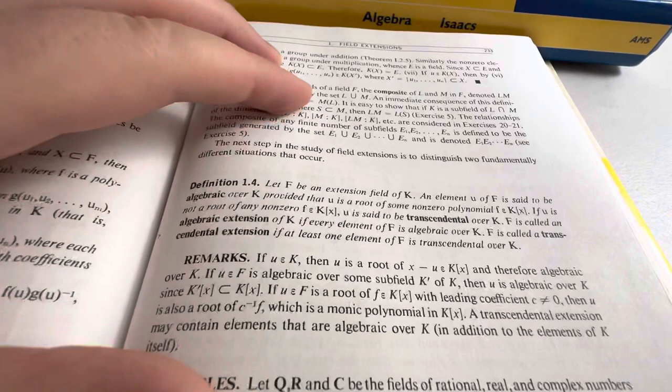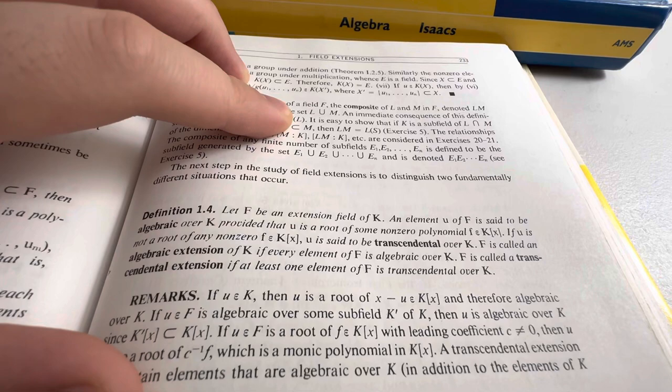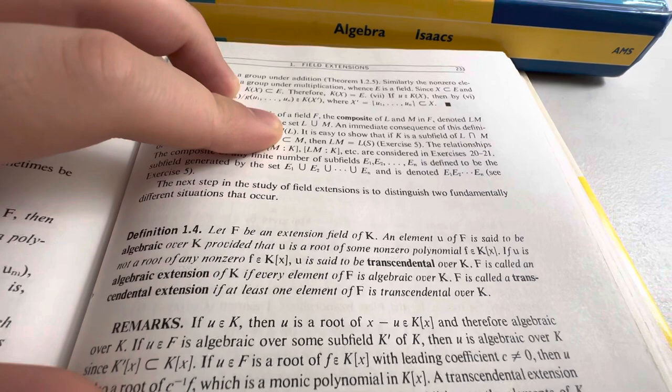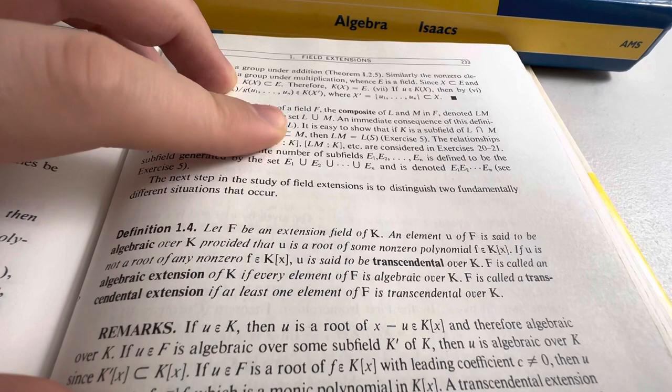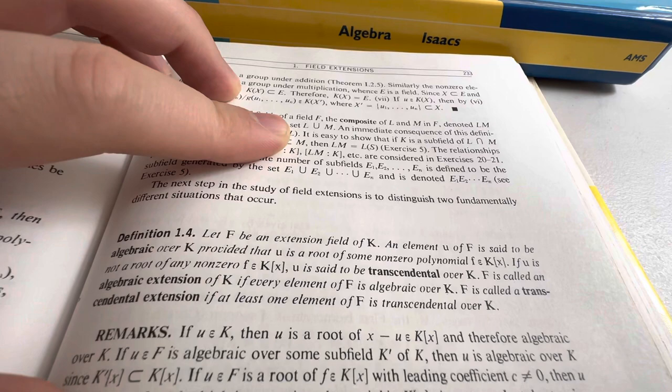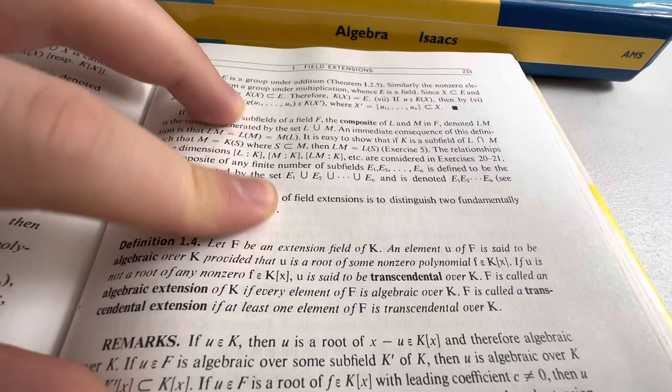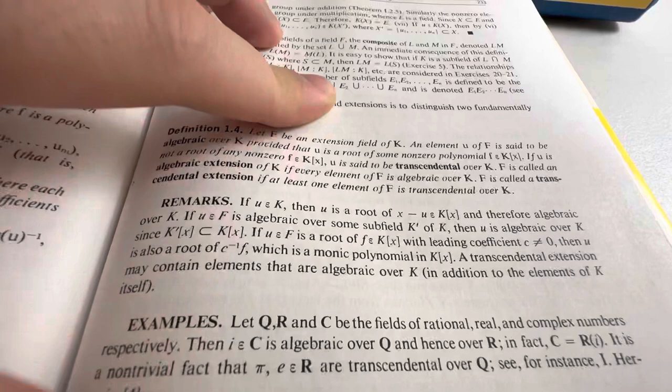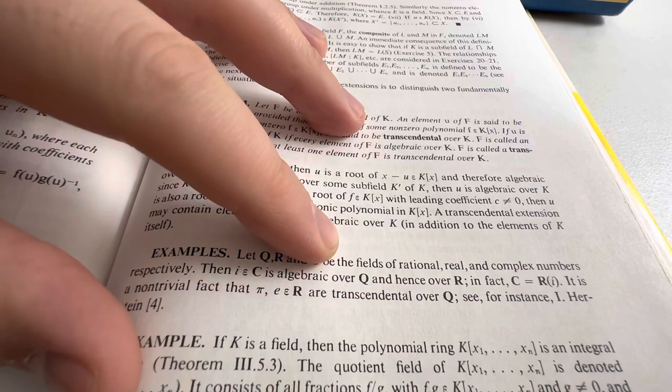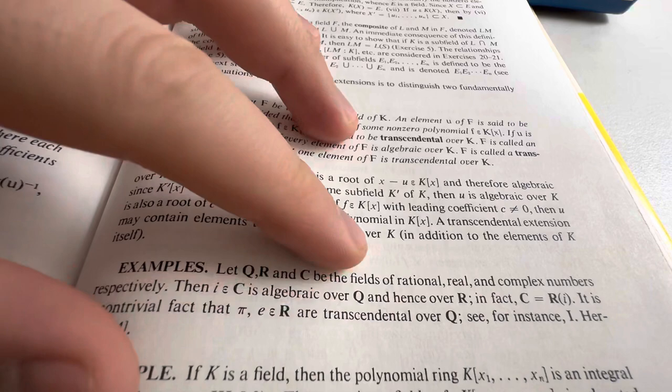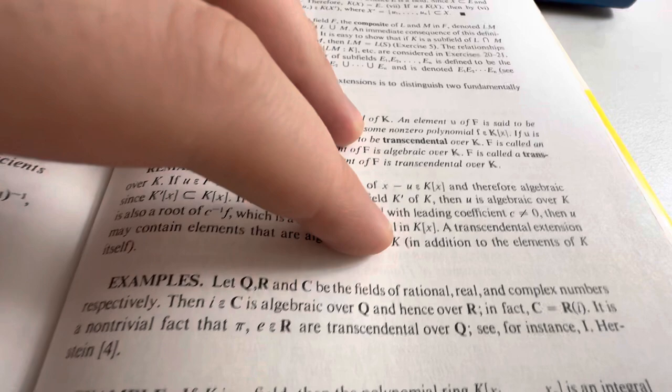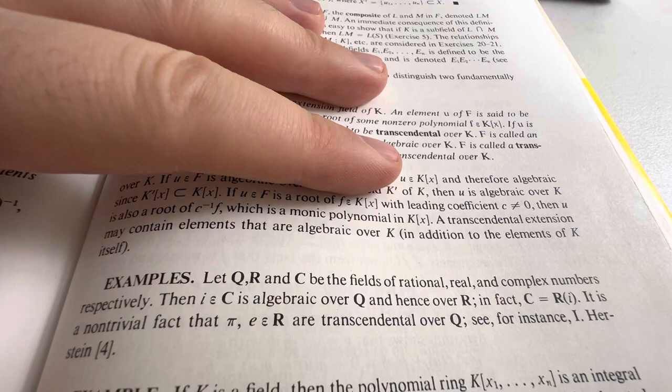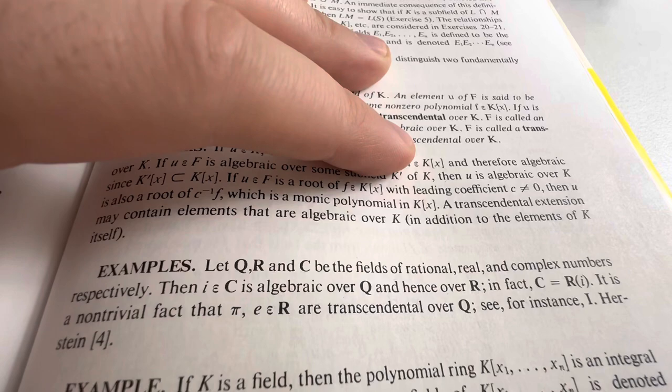Transcendental elements. F be an extension field of K, an element U of F is said to be algebraic over K, provided that U is a root of some non-zero polynomial in K[X]. If U is not a root of any non-zero F in K[X], U is said to be transcendental. F is called an algebraic extension of K if every element of F is algebraic over K. F is called a transcendental extension if at least one element of F is transcendental over K. So we can look at an example. Q, R, and C are the fields of rational, reals, and complex. i is in complex, but it's algebraic over Q. Hence over R. Yeah, that makes sense. Because X squared plus one, right? Has a root at i. In fact, C is R extended by i. It is a non-trivial fact that pi and E are real numbers, transcendental over Q. Non-trivial. That means it's obvious to the author.